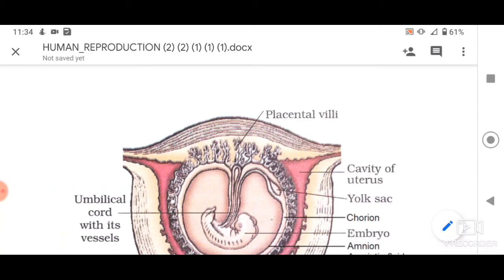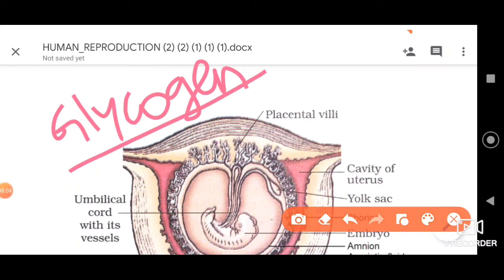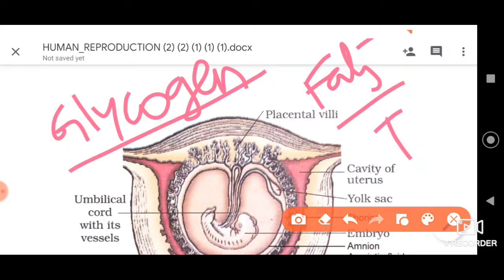The placenta also acts like a liver before the liver is formed in the fetus. It performs important functions such as storage of glycogen, fats, and iron, along with many other nutrients — similar to what we find in the liver. That is why it is said to act like a liver before its formation in the fetus.